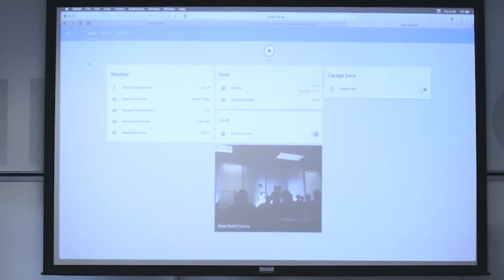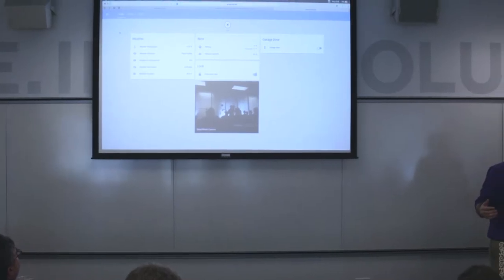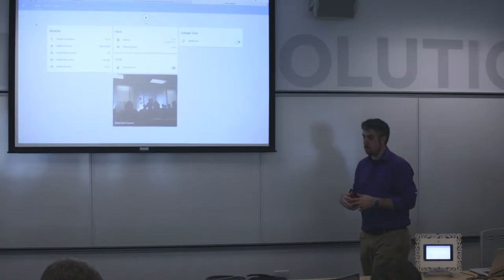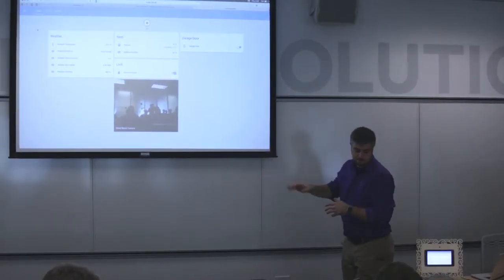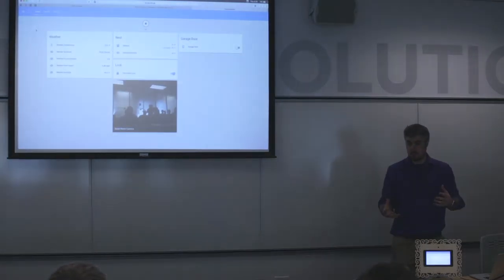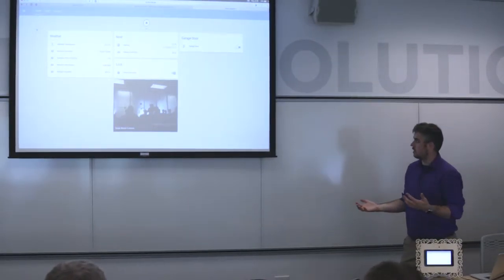This web interface is accessible anywhere that you allow it to be. In this case, the Raspberry Pi starts up its OS and then it launches Chromium in kiosk mode and it loads this website. This website allows you to interact with all the different components that you've assigned to your profile or your Home Assistant configuration.